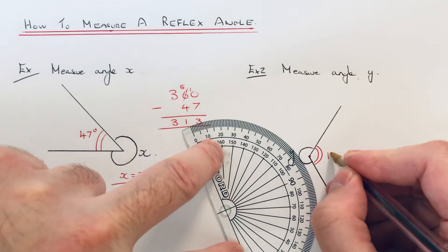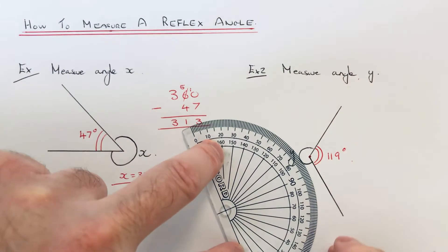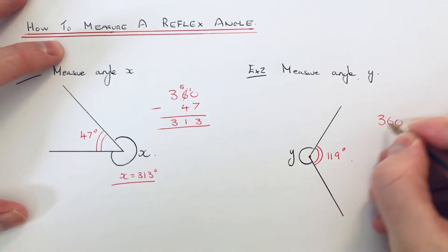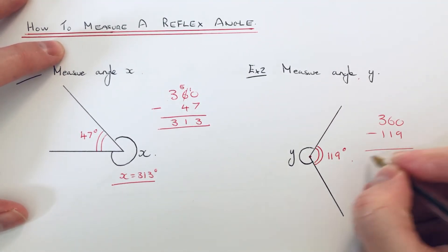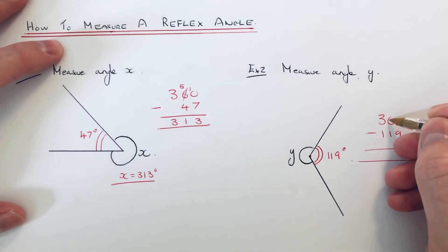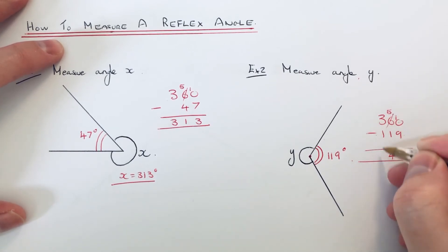So again if we take this away from 360 degrees, this will give us the reflex angle. So no take away 9 we can't do. 10 take away 9 is 1. 5 take away 1 is 4. 3 take away